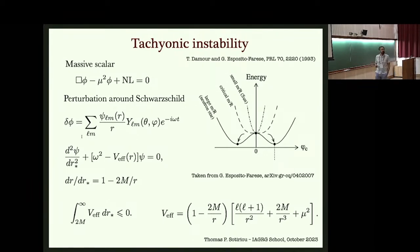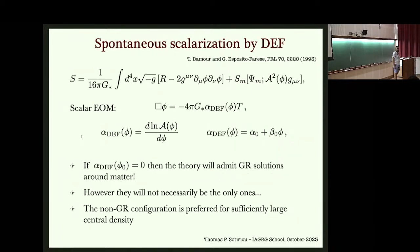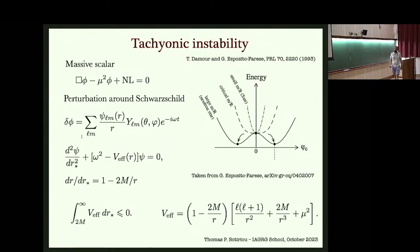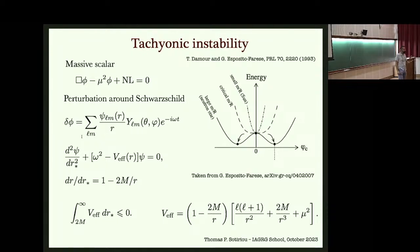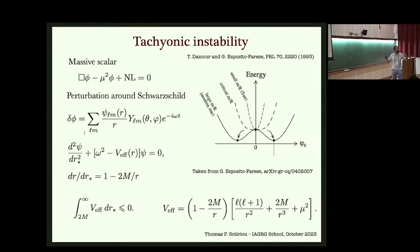Good morning everyone. This is where we left off yesterday. I was telling you about the Damour-Esposito-Farèse model and how it can have for compact stars both GR solutions and non-GR solutions. If the star is not sufficiently compact, the GR solution is preferable. If the star becomes sufficiently compact, the scalar field develops a tachyonic instability and tends to grow.